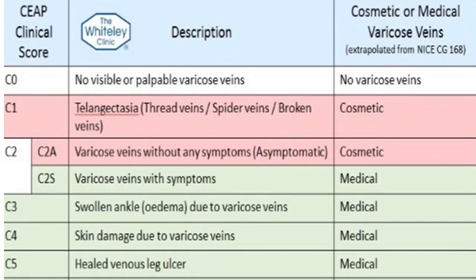The other classification we use mostly clinically is nearly the same. C0 — no visible veins, but they could have symptoms of cramps, which you can only diagnose using the Doppler. C1 — telangiectasia, varicose vein without symptoms or asymptomatic. The rest of the stages are the same as previously described.